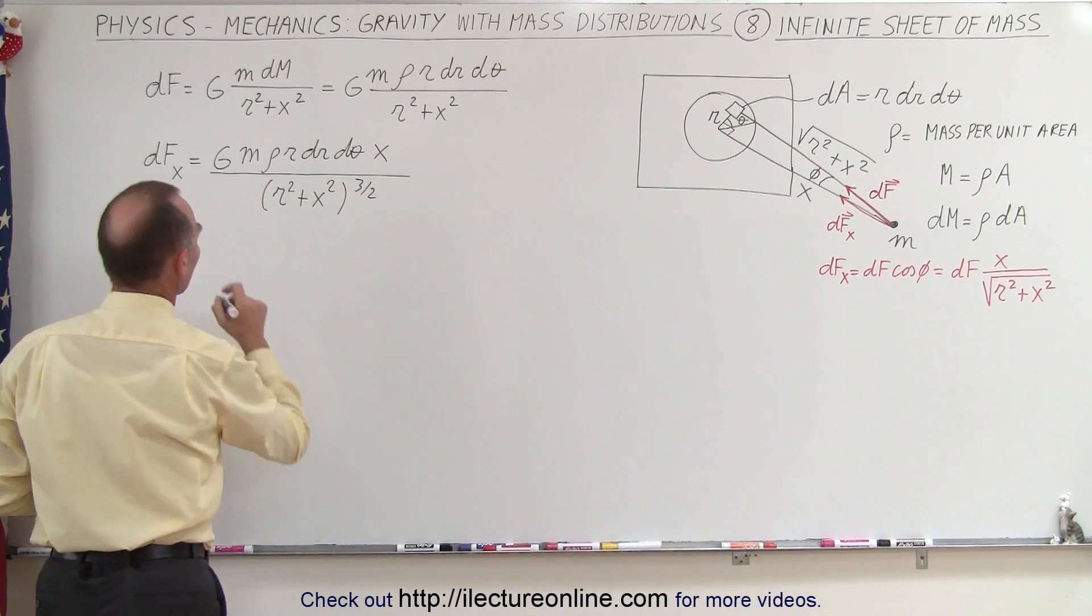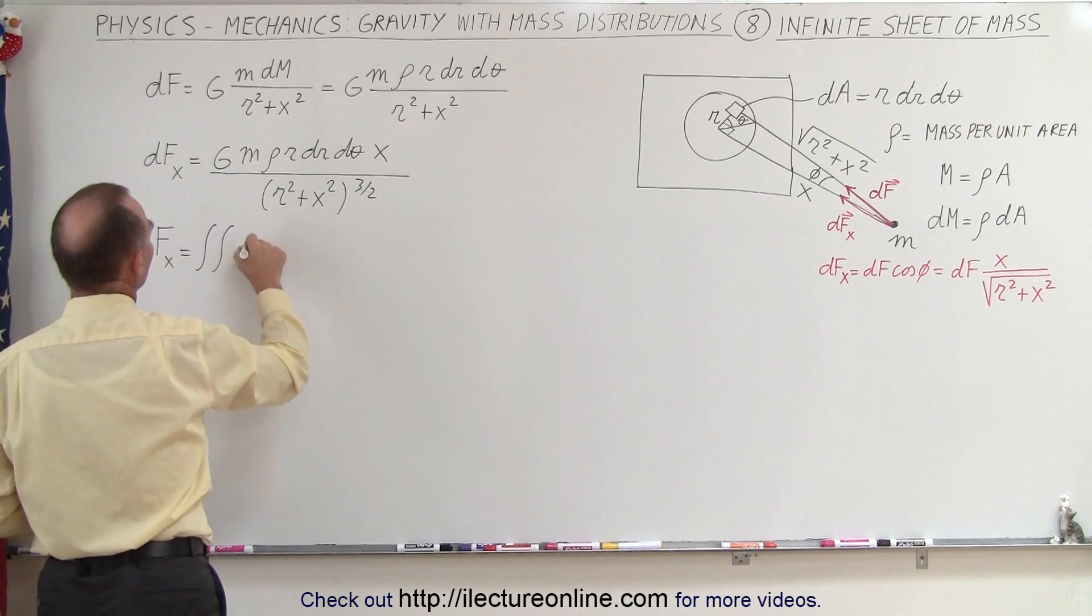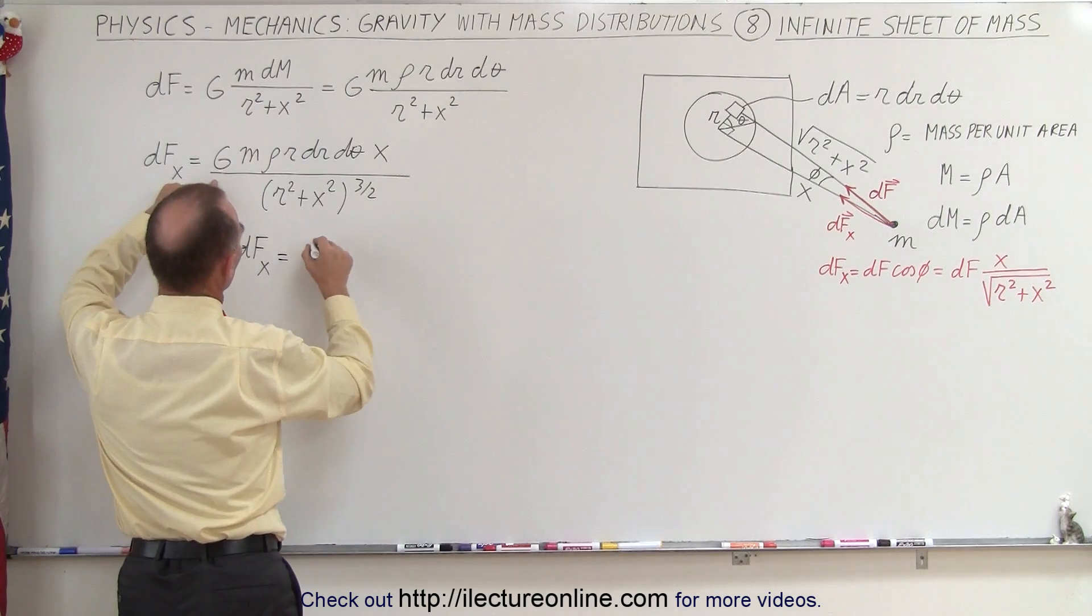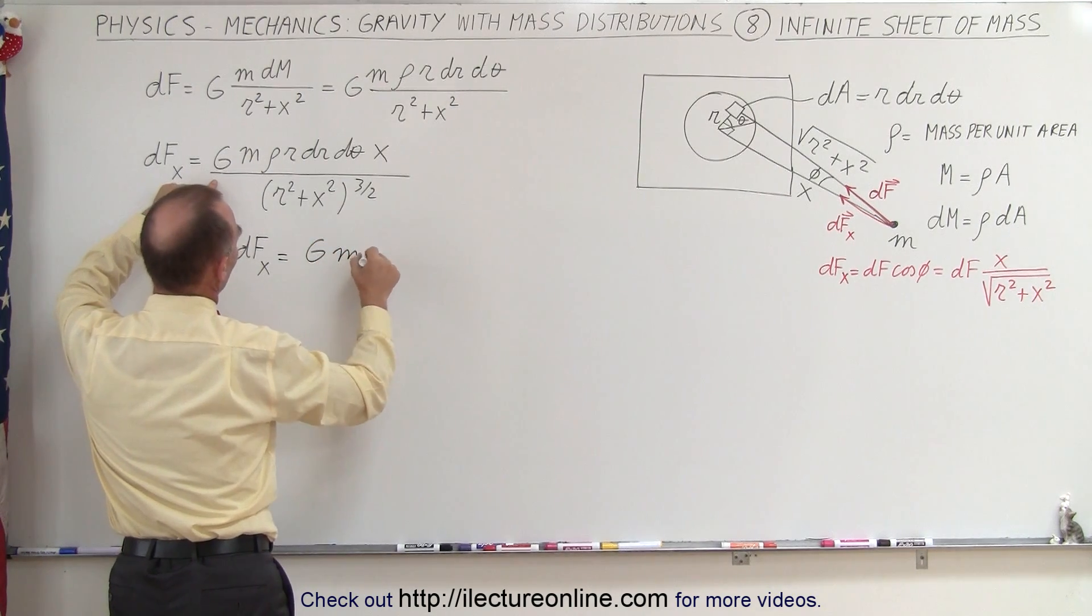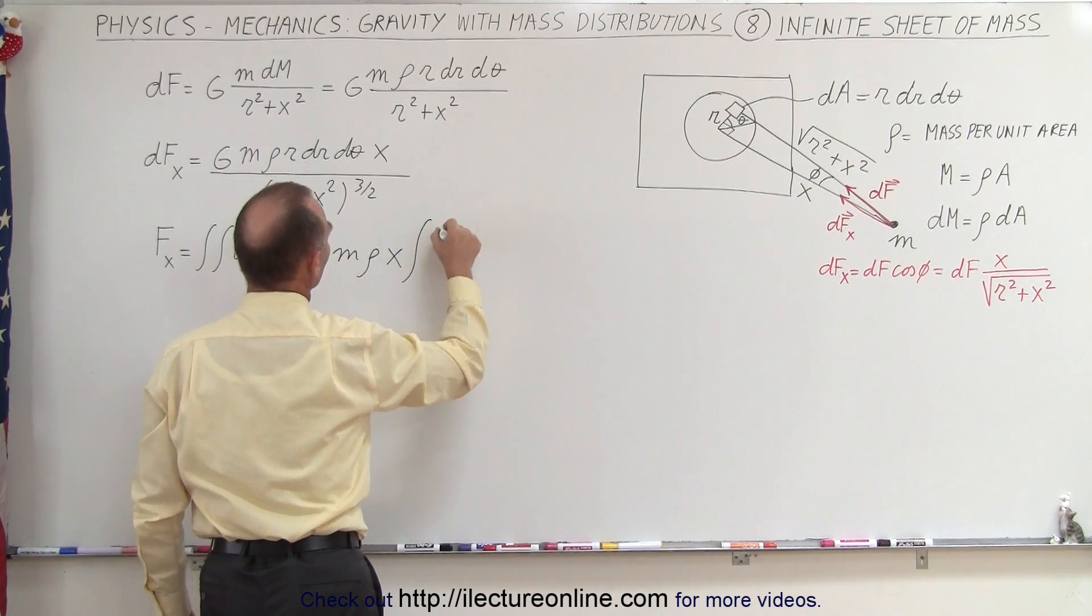So that means we're going to then say that f in the x direction is equal to the double integral of dF in the x direction, which is equal to, and let's take all the constants out, g small m, the density, and x.